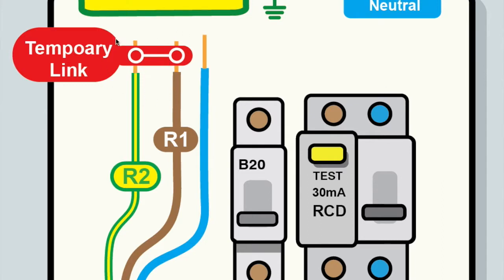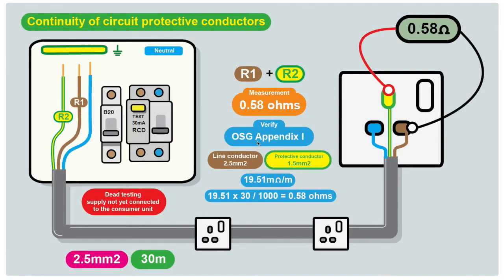Always remember to remove any temporary links as soon as you finish doing any testing. We've finished our test on the continuity of circuit protective conductors for this circuit. We've got a reading of 0.58 ohms which we've recorded, and we've also removed our temporary link.